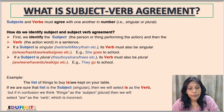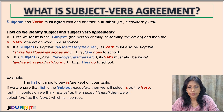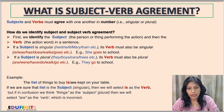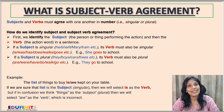Look at this example: 'The list of things to buy is / are kept on your table.' If we are sure that 'list' is the subject and it is singular, then we select 'is' as the verb — that is correct. But if in confusion we think 'things' is the subject, which is plural, then we select 'are' as the verb, which is incorrect.